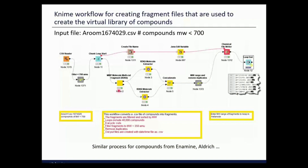If you fragment that entire library, you're likely to end up with fragments that have been incorporated in compounds we think are drug-like. You run this through the KNIME routine and end up with a fragment file with the R-star marked as the fragmentation position. We don't fragment every compound in the ARAM — we filter for molecular weight less than 700 — and keep different sets of those fragments, ending up with a text file that goes into FastGrow.